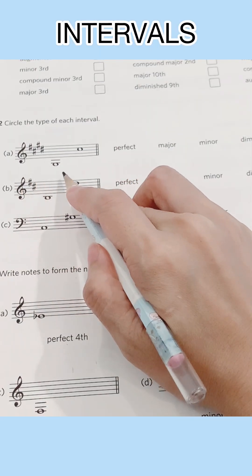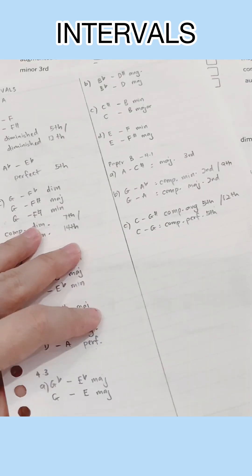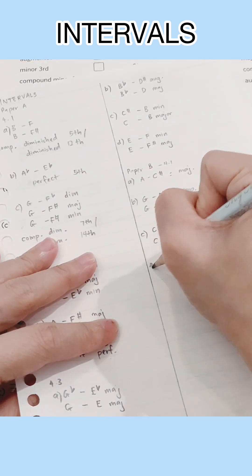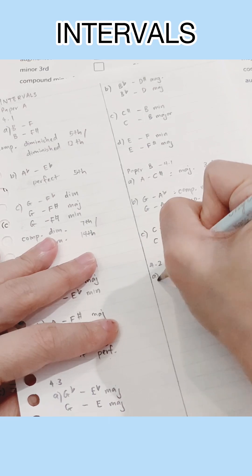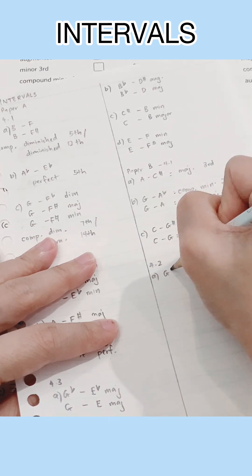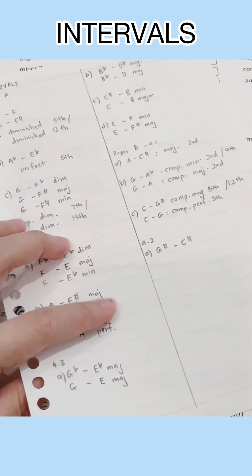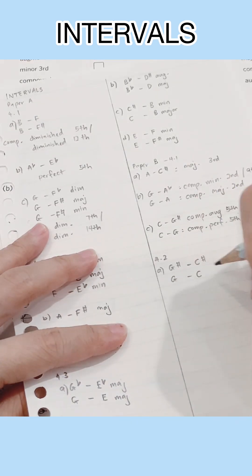Moving on, we now have G sharp and C sharp and we're only required to name the type of interval for this question but it doesn't hurt if we can name the whole complete interval. So in G major scale, C is a perfect fourth.